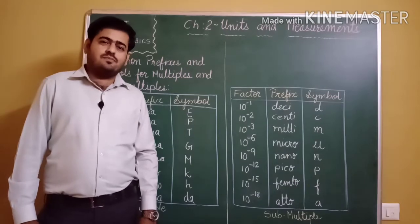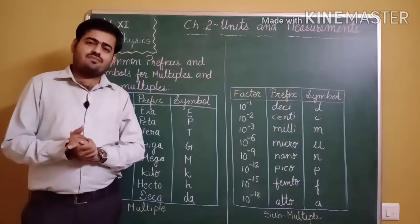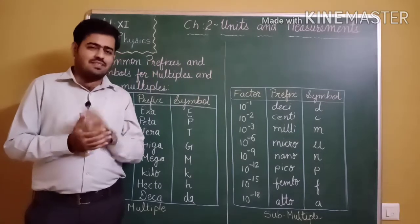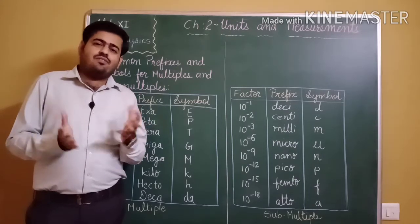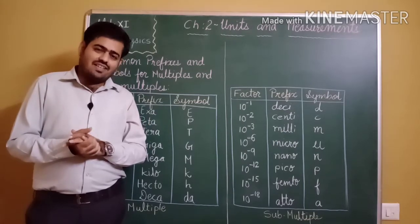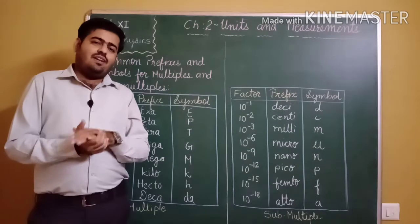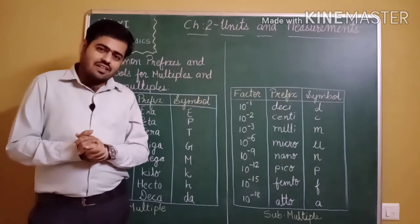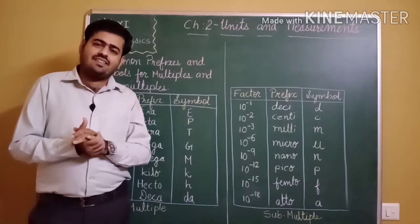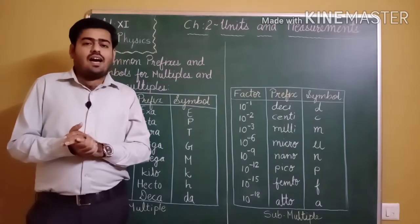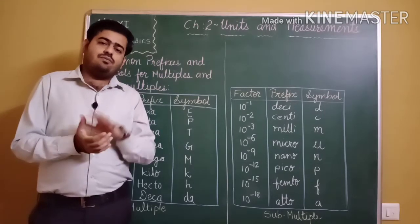Dear students, I am Deepak Vanjani. Today we will continue with chapter number two: Units and Measurements. Last time we studied about units and measurement. A unit is a reference standard to measure any physical quantity. Any quantity which can be measured is called a physical quantity — for example, length, temperature, mass, volume, area, etc.